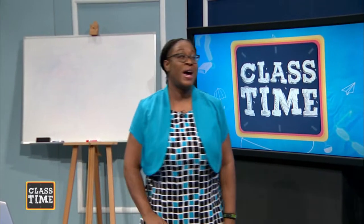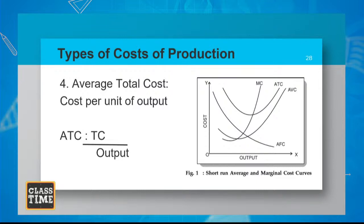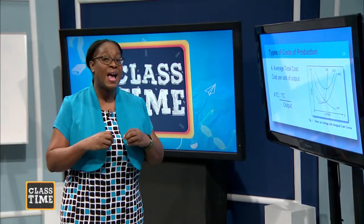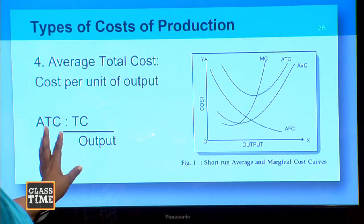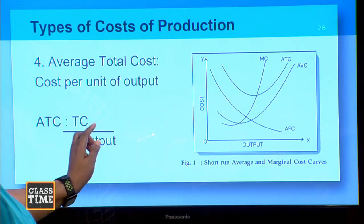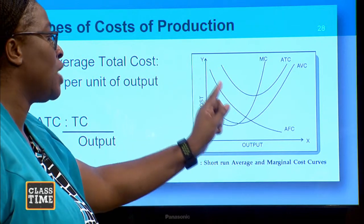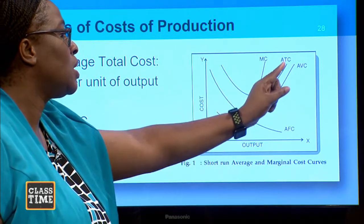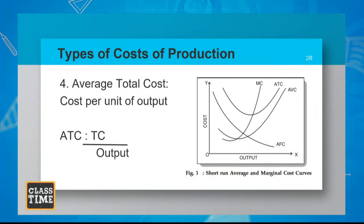Let's look at average total cost. Average total cost is the cost per unit of output, calculated as: Average Total Cost = Total Cost ÷ Output. Please jot this formula in your notebook. Note that the average total cost curve is U-shaped — keep that in mind for another lesson, but note the shape of the curve.